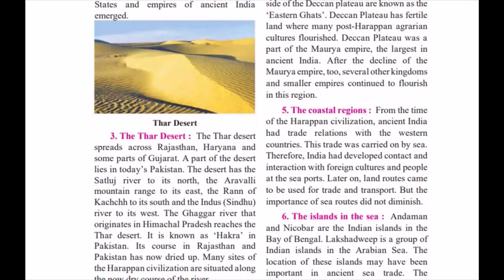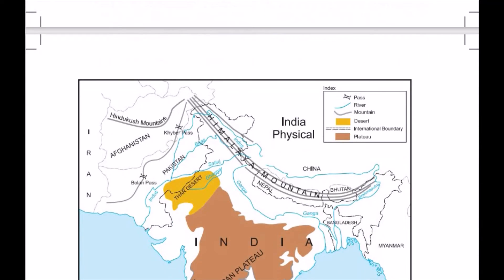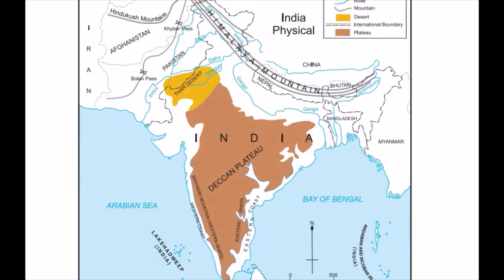We could also see the coastal regions — how coastal regions developed trade relationships with other countries, how we came in contact with foreign countries when the land routes were discovered by various people. But the sea routes did not diminish. Then we saw the map making, the Deccan Plateau, the Himalayan mountain.